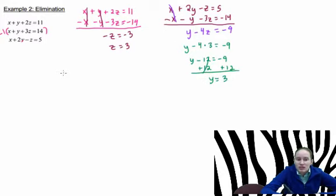Now take it all the way back to the beginning. And I'll just use the first one. It looks easy enough. x plus y, which is 3, plus 2 times z, which is also 3, equals 11. 3 plus 6 is 9. Subtract 9. x equals 2.